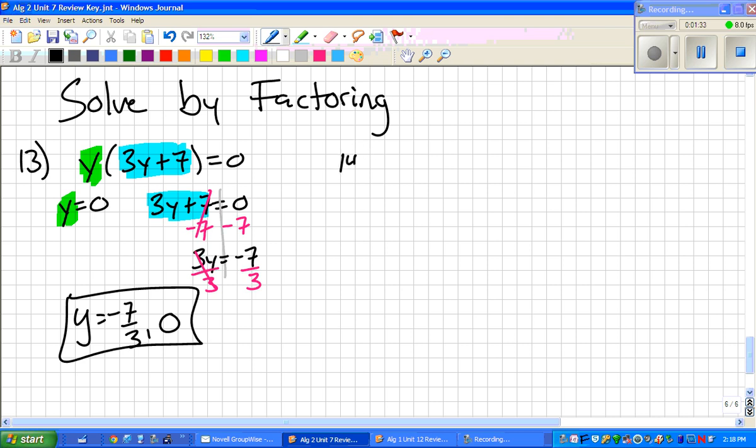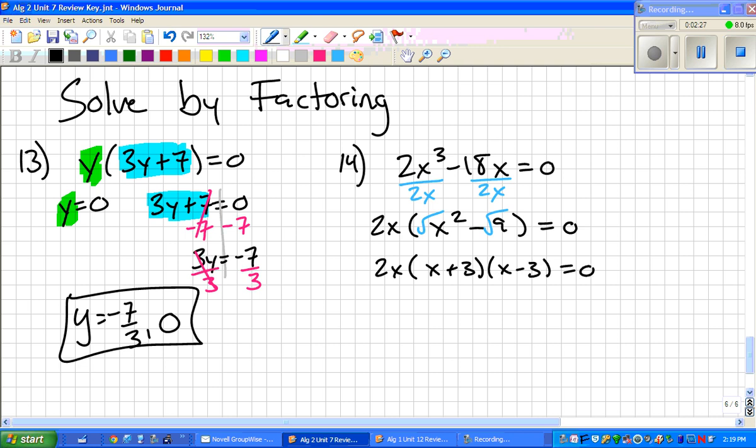Alright, 14 is 2x cubed minus 18x equals 0. Now you can't just be like hey look it's a cubed root I'm going to go on like that. You can't do that. The reason is because there's a GCF. You can divide and factor a 2x out. And then when you do that you get x squared minus 9 equals 0.